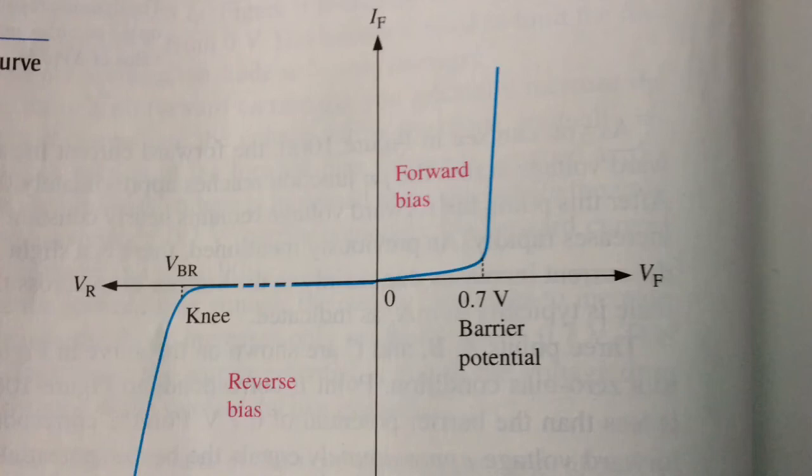As you continue to increase the bias voltage, the current continues to increase very rapidly, but the voltage across the diode increases very little above VBR. Breakdown, with exceptions, is not a normal mode of operation for most P-N junctions.